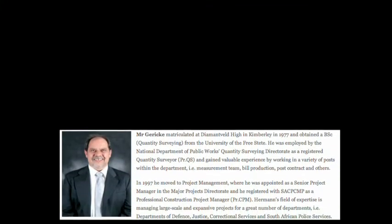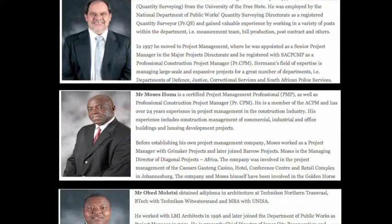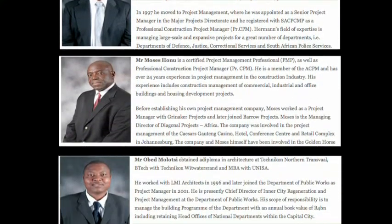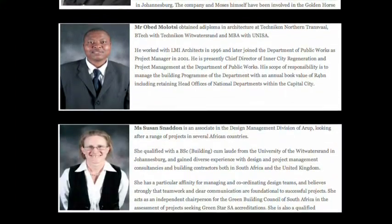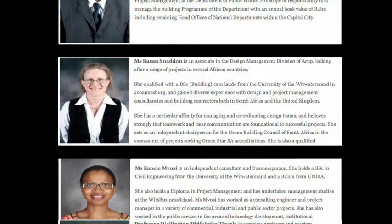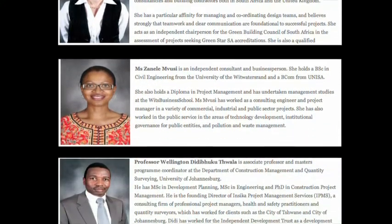Council is made up of 10 members. Six are from the Project and Construction Management Fraternity, meaning they are registered with council and are practicing as professionals. Two are from government, directly appointed by the Minister of Public Works, and two are public representatives. All these 10 members are directly appointed by the Minister. The current council started in October 2009.